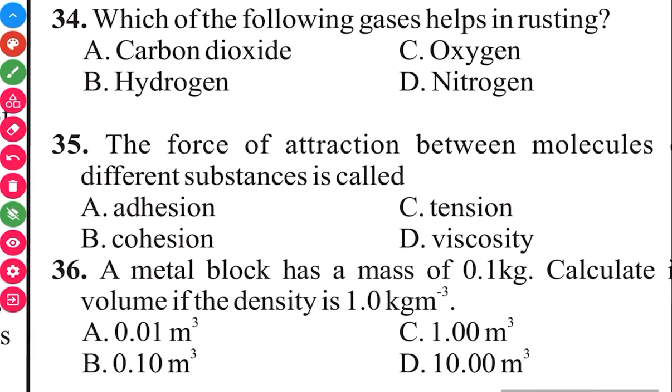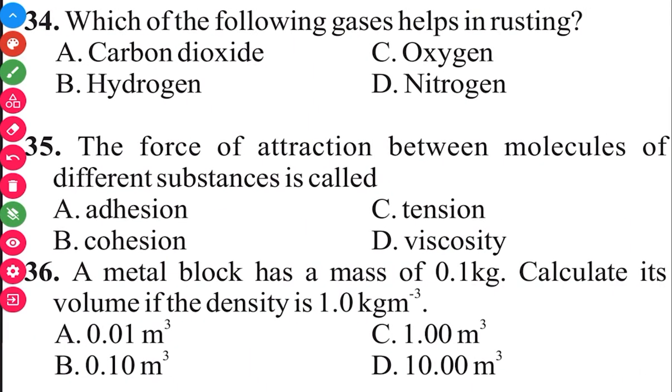A metal block has a mass of 0.1 kg. Calculate its volume if the density is 1.0 kg per meter cube. Density equals mass over volume. Volume is equal to 0.1 over 1, which is equal to 0.1. So the answer is 0.10 meter cube, which is B.